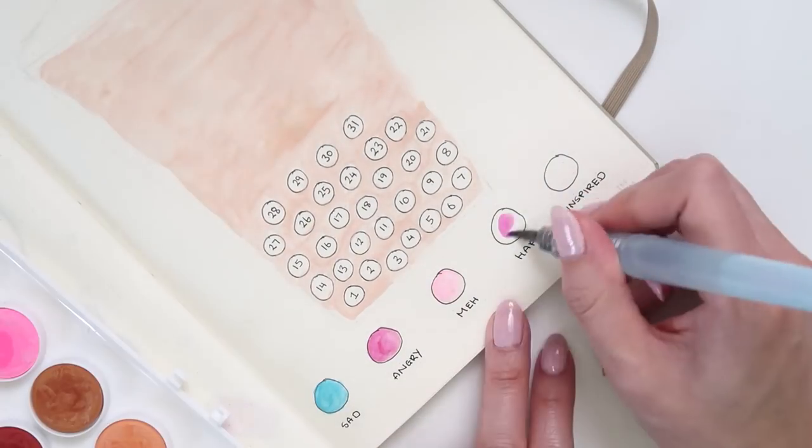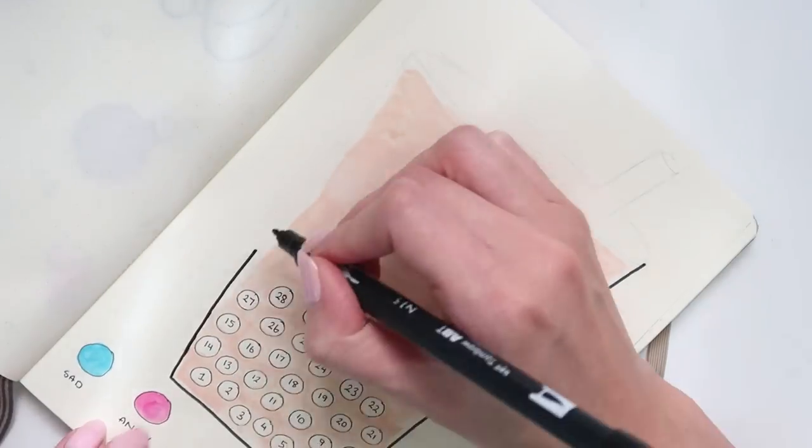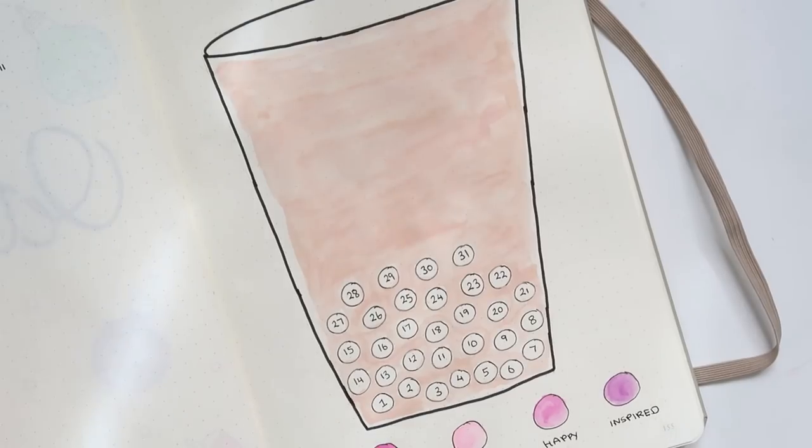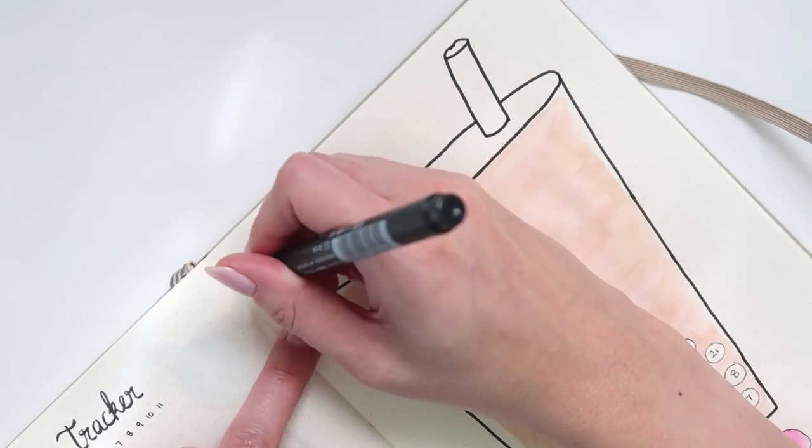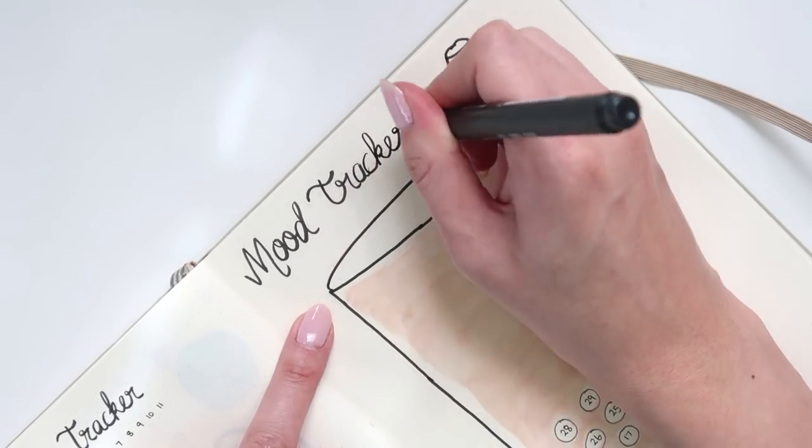In the past, a lot of my mood trackers would allow me to track multiple moods a day, so I could feel angry and sad and happy all in one day, which is quite typical for me. But this particular mood tracker only allows you to track one key emotion for each day, which I'm not really sure how that's going to go down for me.